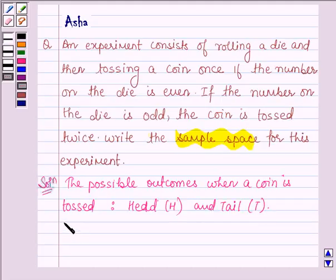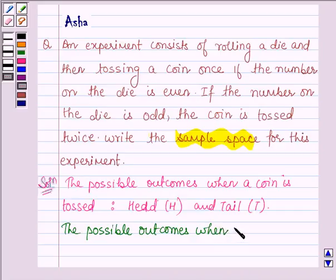The possible outcomes when a die is rolled are 1, 2, 3, 4, 5, and 6.